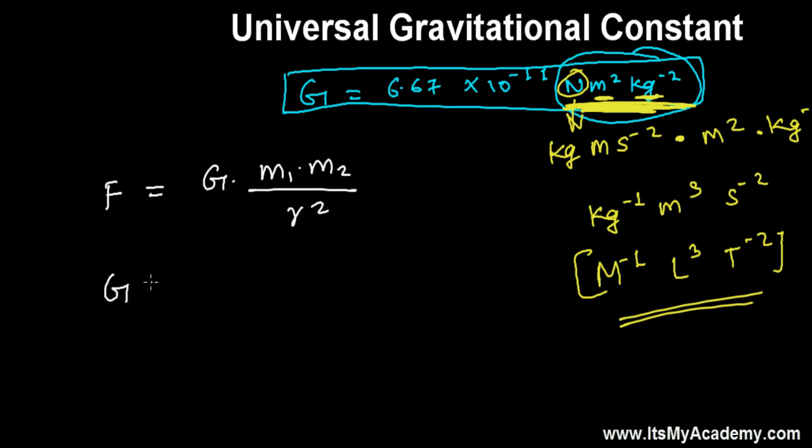The force existing between any two heavenly bodies or any two bodies is G times M1 times M2 divided by the square of the distance between them. So from here, G goes to force times R squared divided by M1 times M2. And what's force? Force is mass times acceleration.